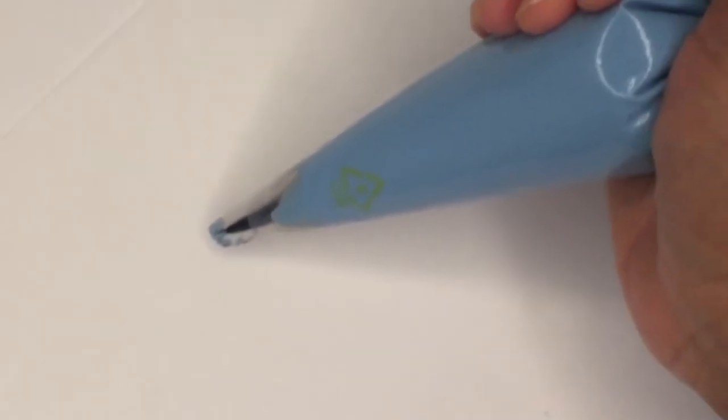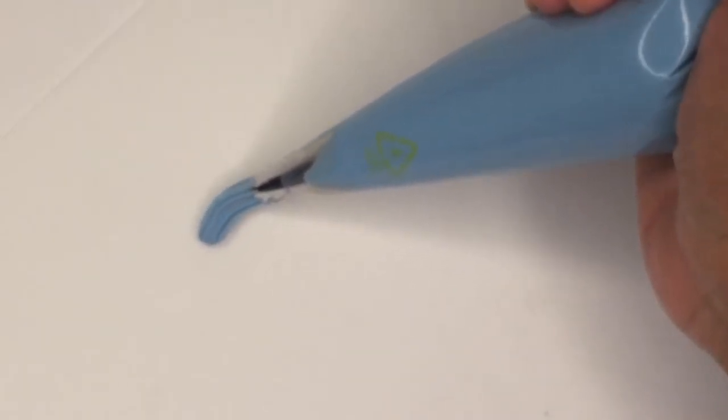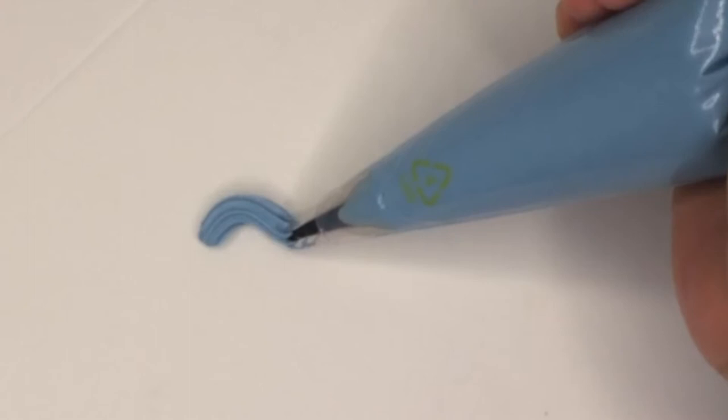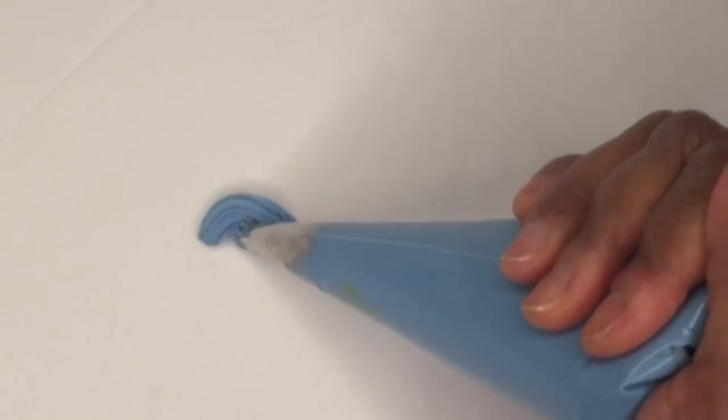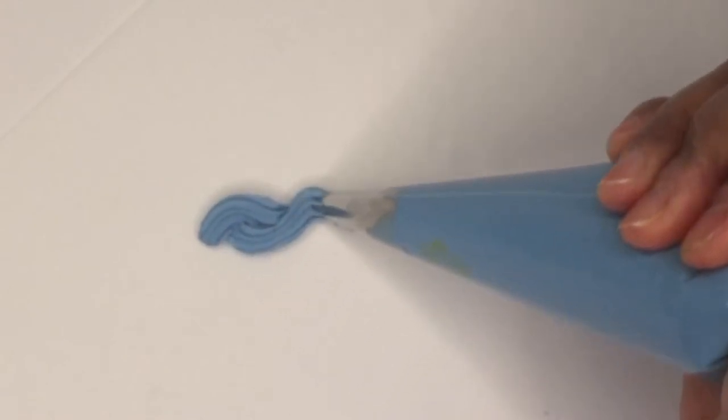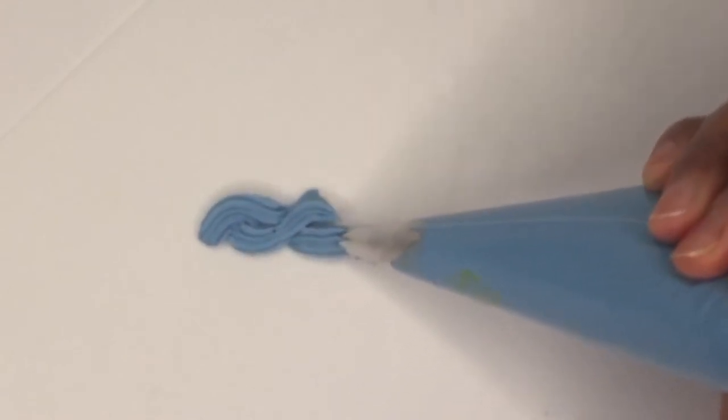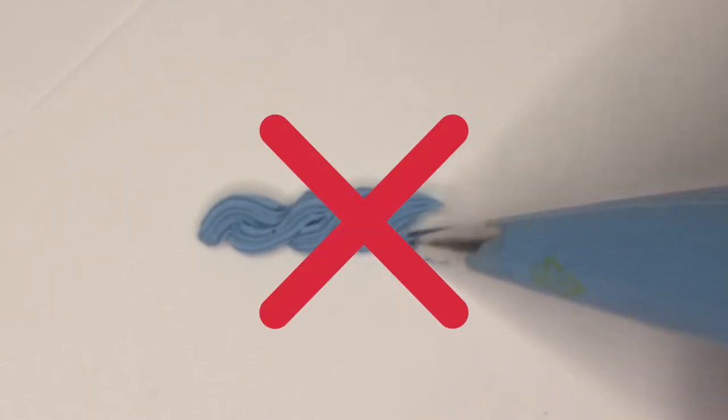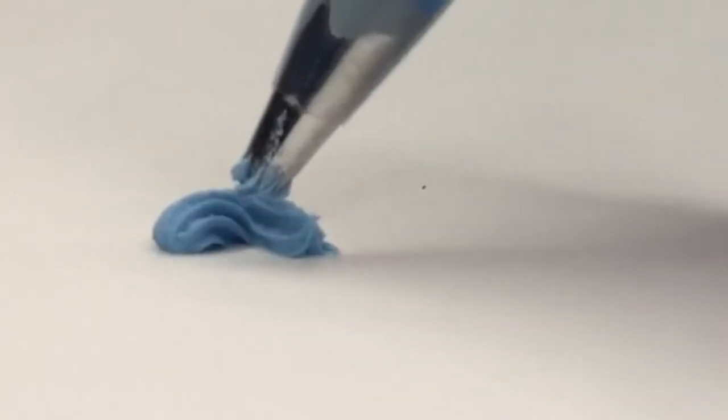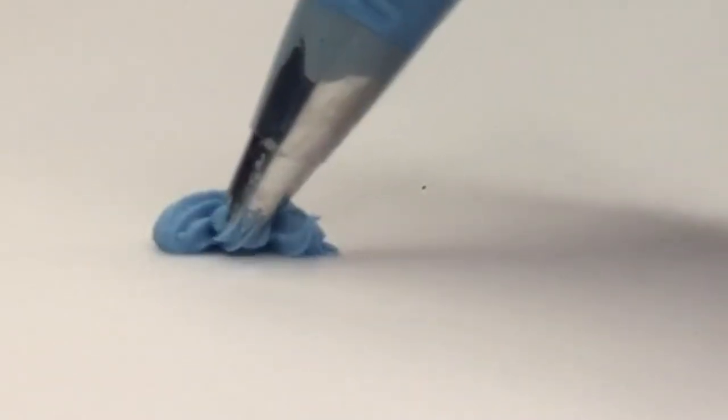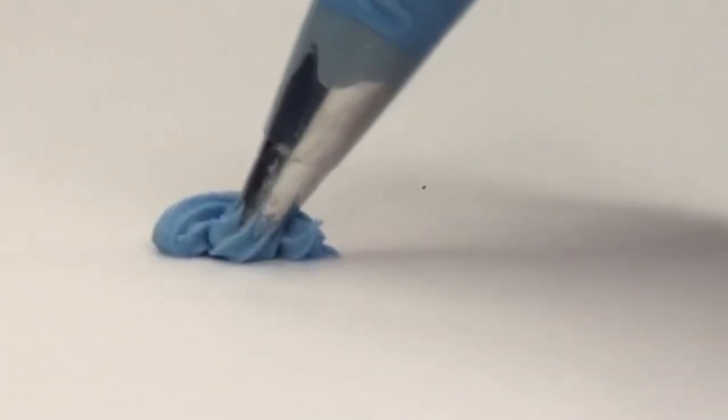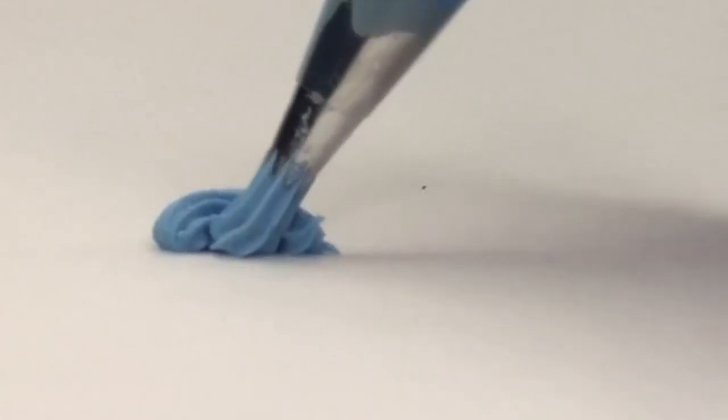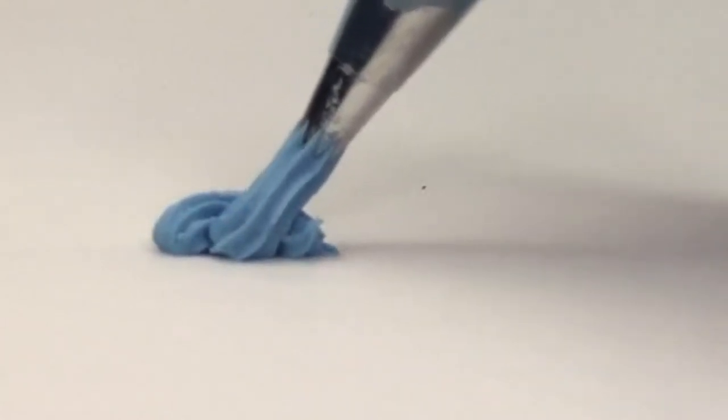Now that I've shown you the correct way to pipe a rope, let me show you a way that I've seen this technique done incorrectly. A lot of times I see people pipe our initial shape and then just simply pipe a wavy line underneath it to try to create a rope. Just know this is not the correct way to achieve a buttercream rope. The key to mastering this technique is making sure that you're piping up and over your previous icing each time.